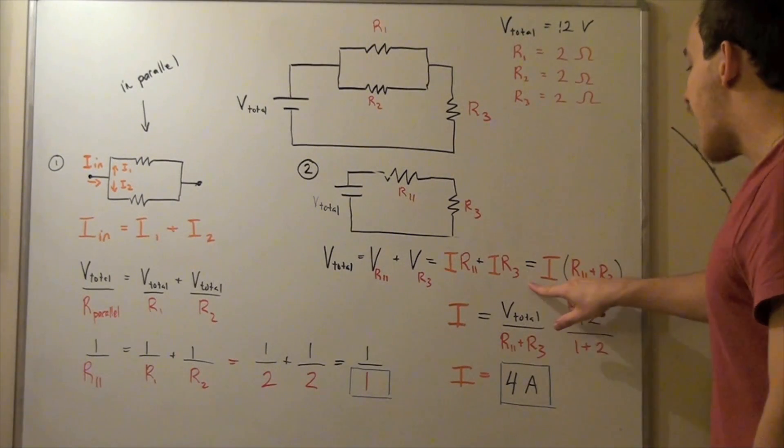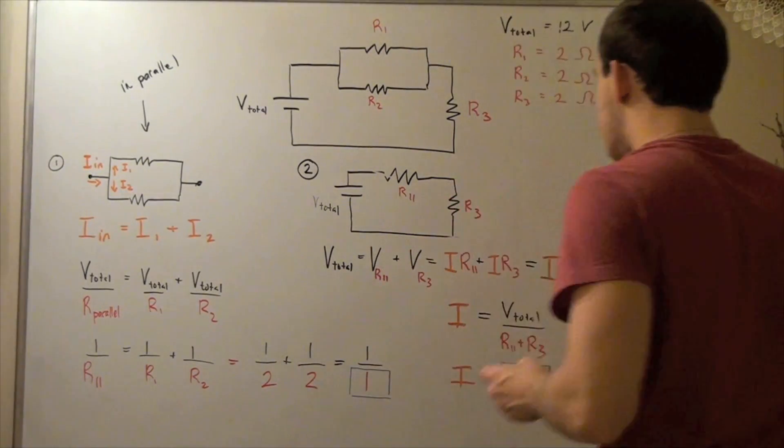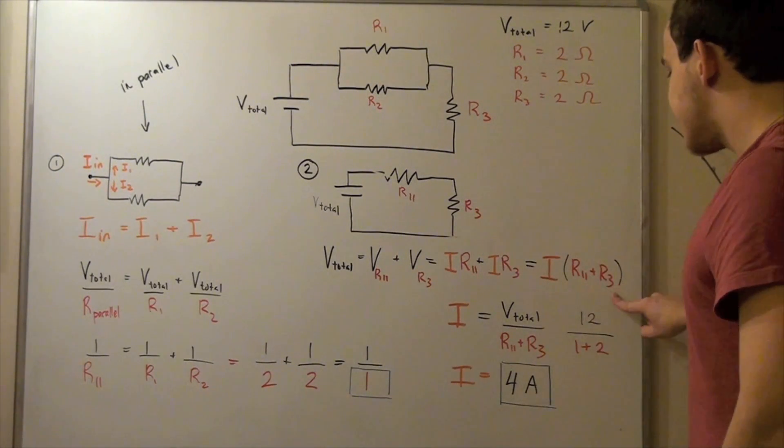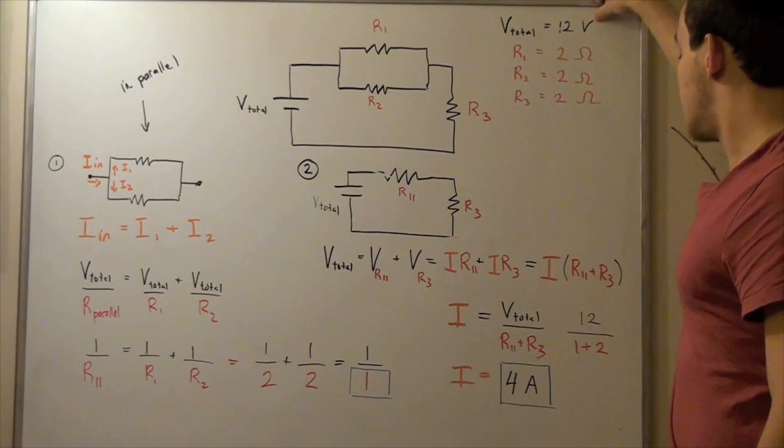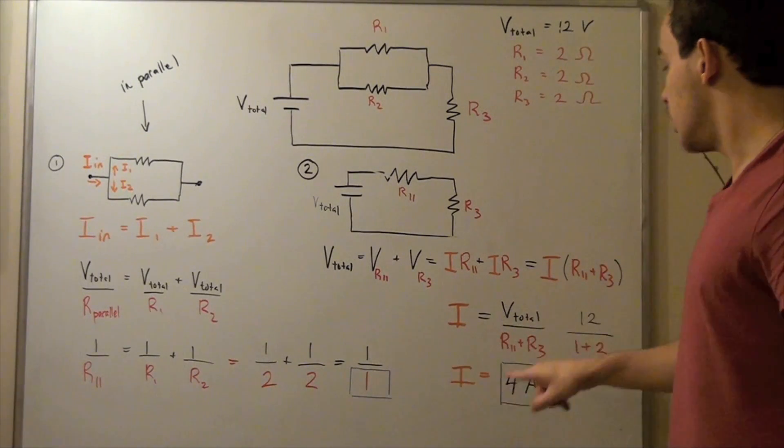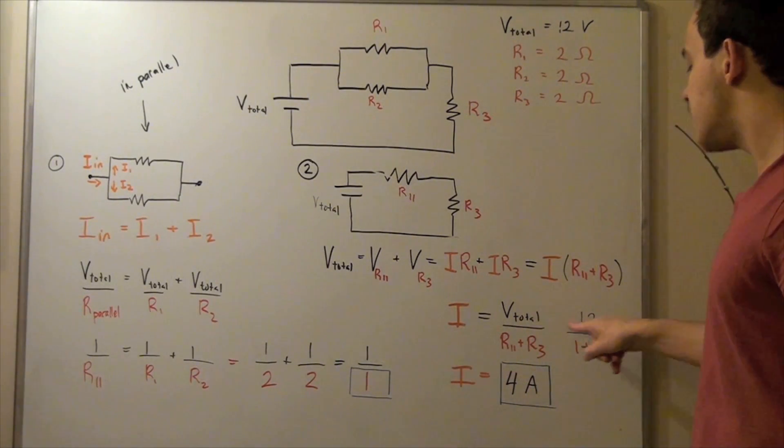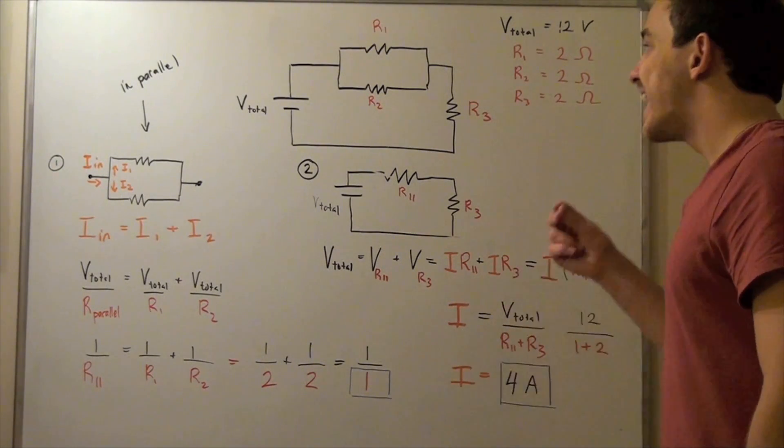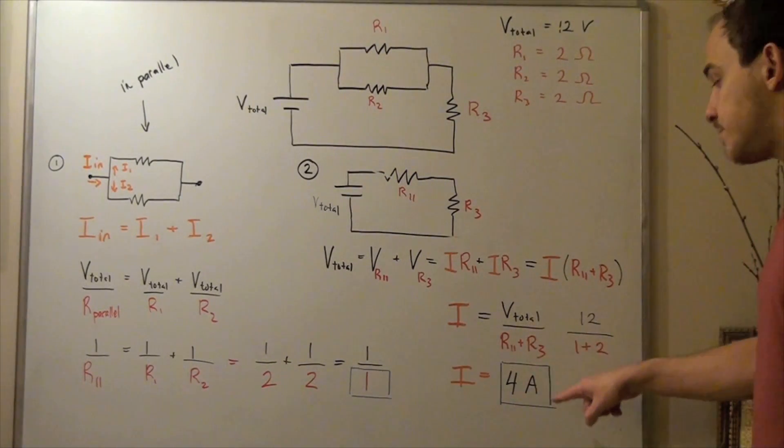Now to find our I, we simply bring this over underneath. So our current equals V total divided by this. Our V total is given as 12 volts. So 12 volts divided by 1 plus 2 gives us 3. So 12 divided by 3 gives us 4. Our current that leaves our cathode is 4 amps.